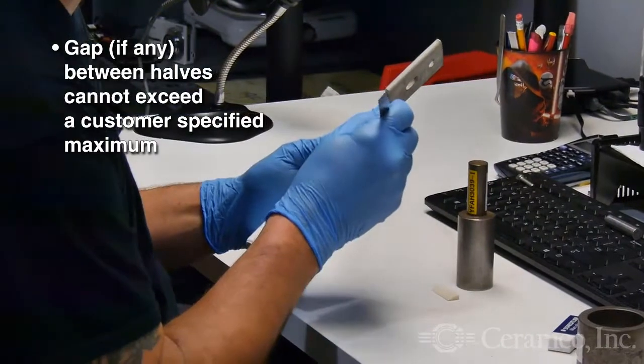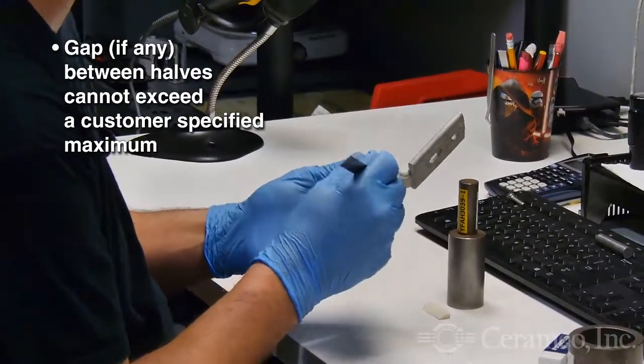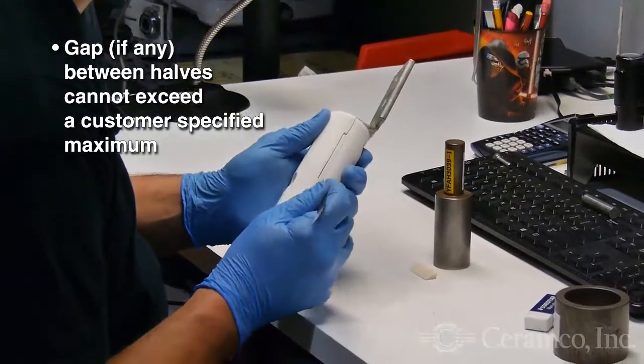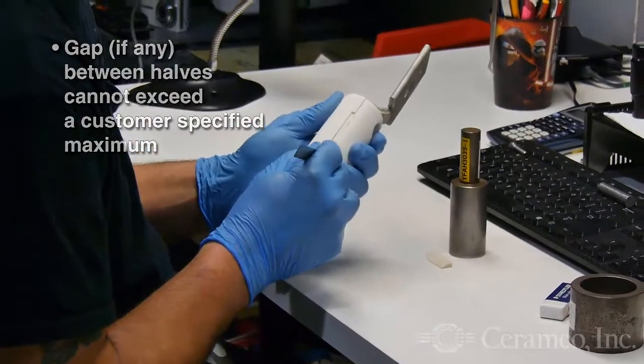With these tolerances confirmed, the mated halves are then inspected to confirm the gap, if any, between the mated halves do not exceed customer specifications. This test is performed on both sides and in numerous locations along the seam.